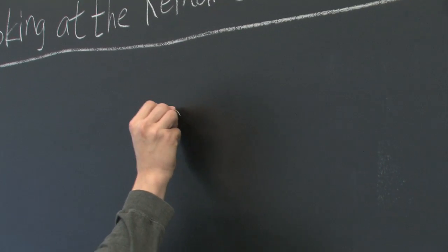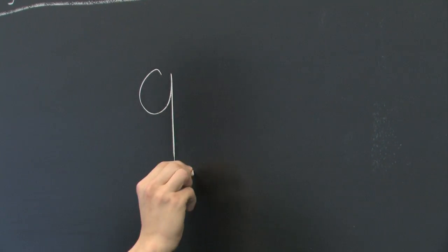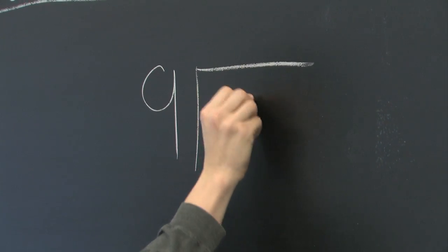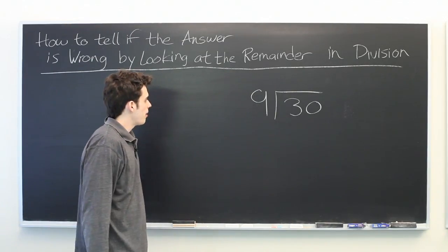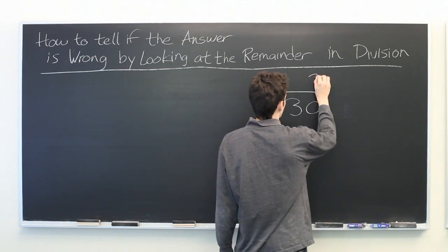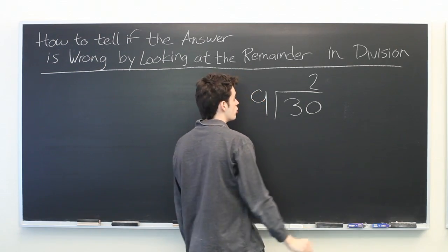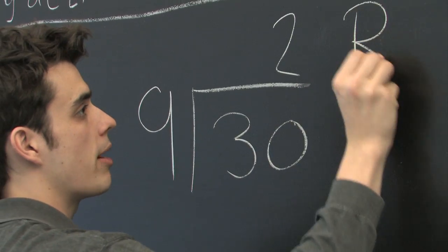Let's suppose that you're trying to divide 9 into 30. And what you end up with after carefully crunching the numbers is 2 with a remainder of 12.